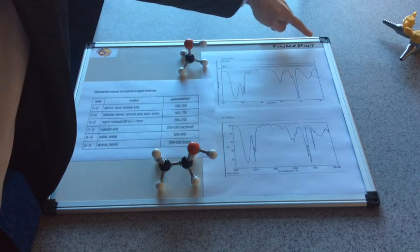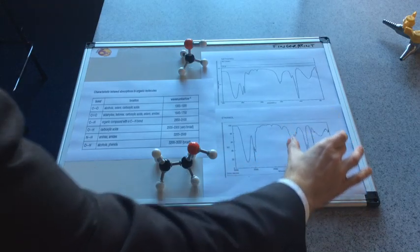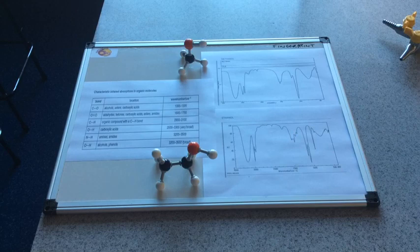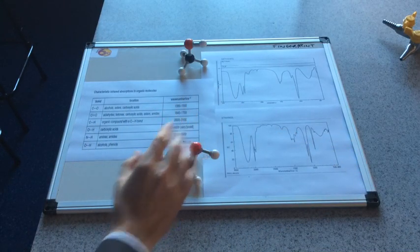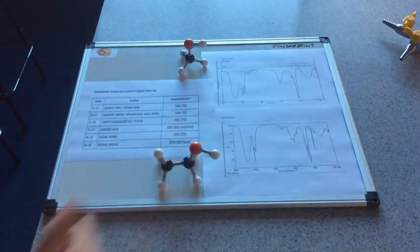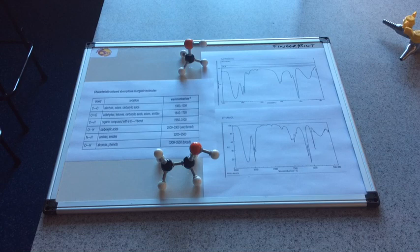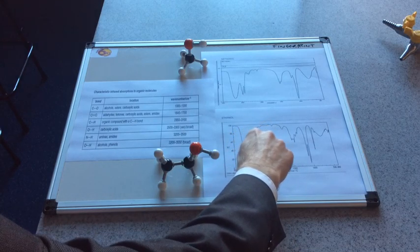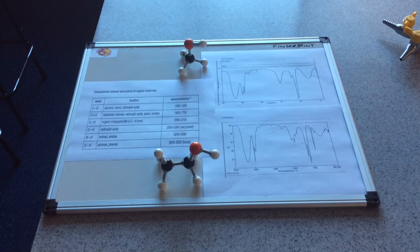Another thing to note is what we call the fingerprint region, and that's typically anything below 1500. Now for the exam we don't need to mention the fingerprint region, but I'm going to mention it because the fingerprint region of an infrared spectrum is unique to that molecule. So ethanol is the only molecule that would have a fingerprint region that looks like that, and because these are all linked up to computer databases, the computer would measure the infrared spectrum and find a match in its database based on the fingerprint region - that unique fingerprint identical to the spectrum just measured.